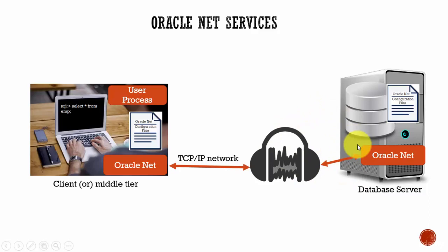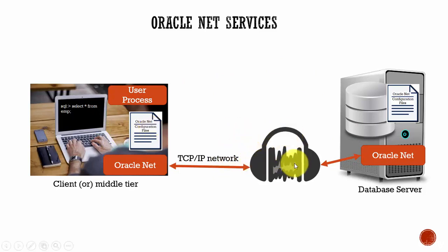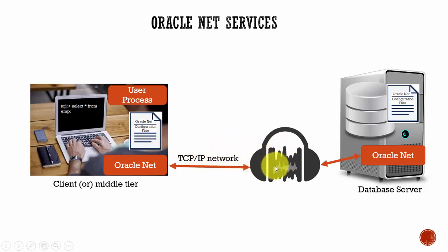Once the listener is configured on the database server, the client needs to know four properties in order to connect: the host where the listener is running, the port the listener is running on, the protocol the listener is using, and the name of the service that the listener is handling. If you have these four pieces of information about the listener, a client application can connect to the database server.